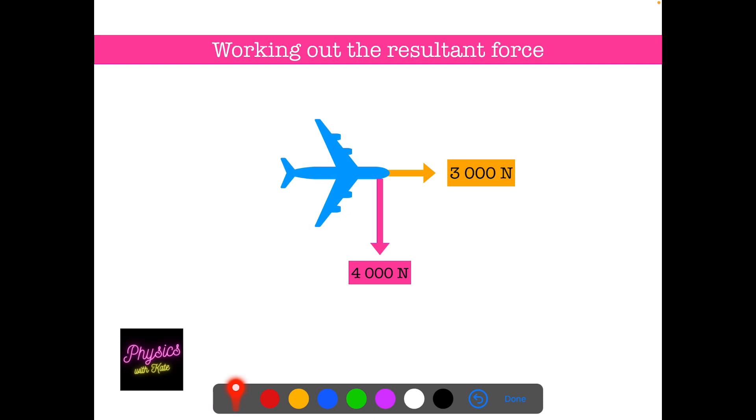So here we've got a plane. It's been acted on by two forces, one forwards and one at a right angle going down the screen. So the question would be, what's the resultant force on the plane?